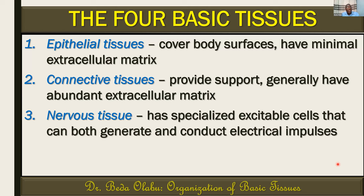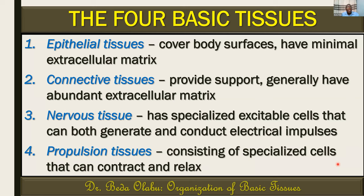The third basic tissue is nervous tissue. Nervous tissue consists of specialized excitable cells, which we call neurons, which are able to both generate electrical impulses called action potentials and conduct these electrical impulses — so they're important in communication. Lastly, we have propulsion tissues, which consist of cells that have the ability to contract. This is largely the muscle tissue, although contractile cells are not limited to muscles.